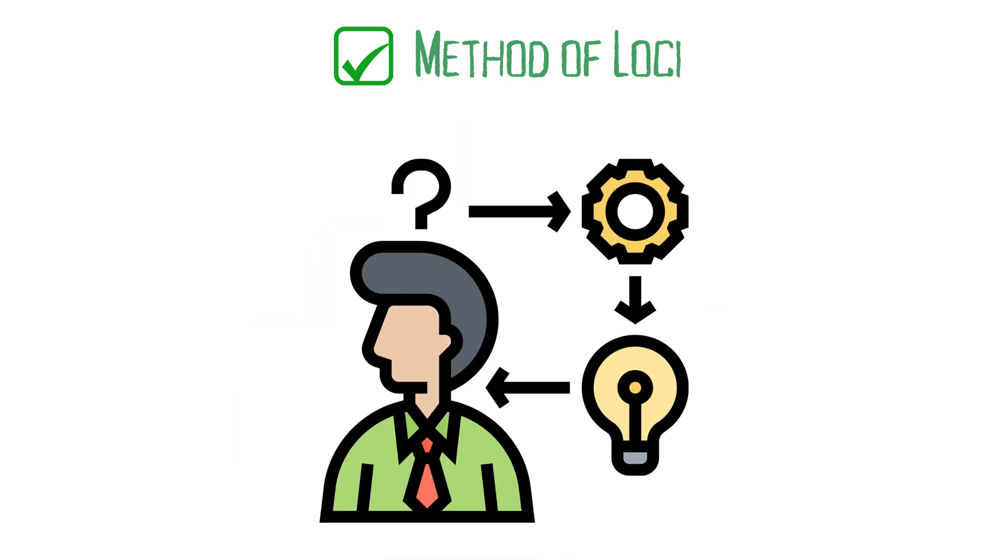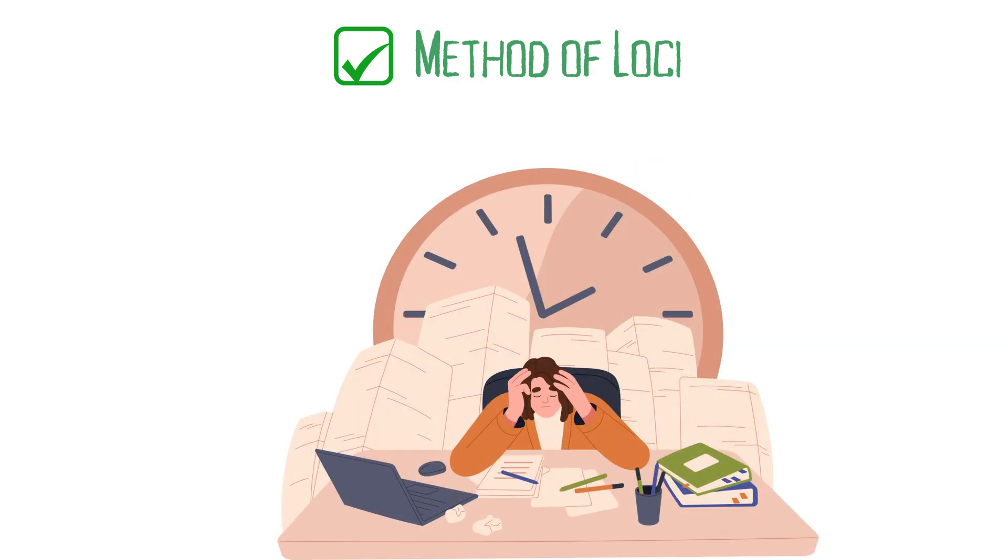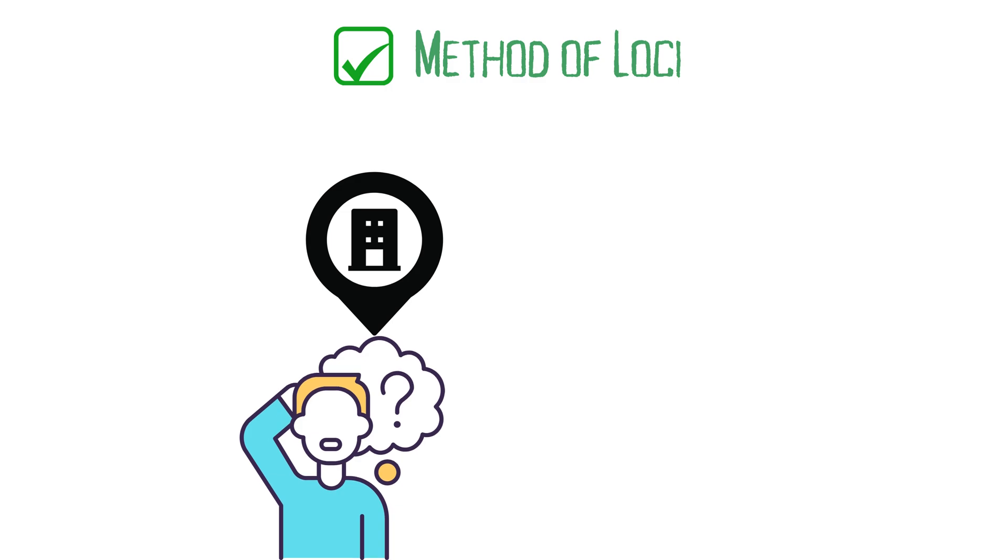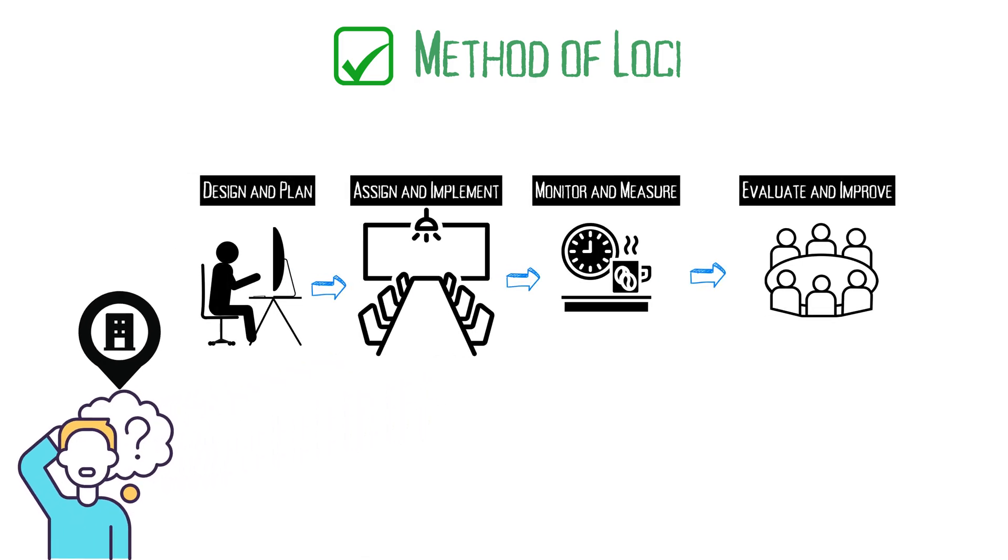Let's explore some advanced examples. Suppose you need to remember a complex sequence, such as the steps in a business process. Create a memory palace based on a familiar place, like your office building. Assign each step to a specific location within the building. As you mentally walk through the building, you'll be able to recall each step in order.